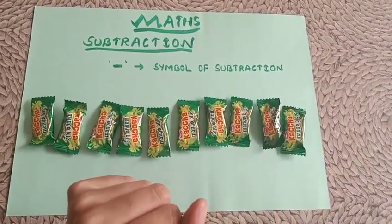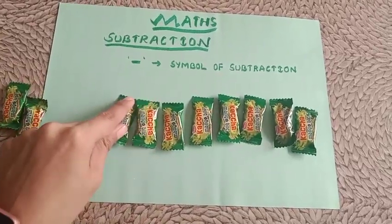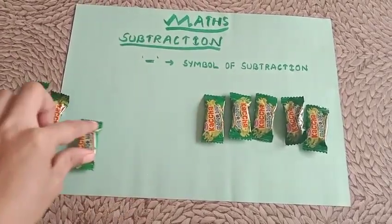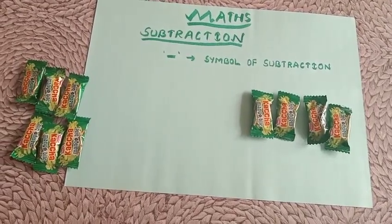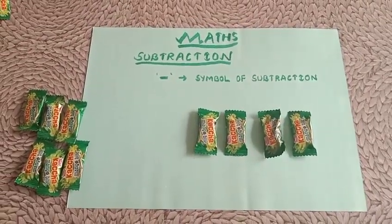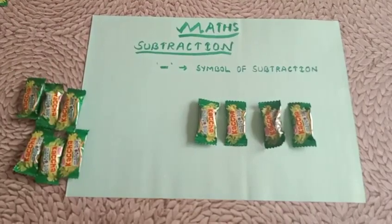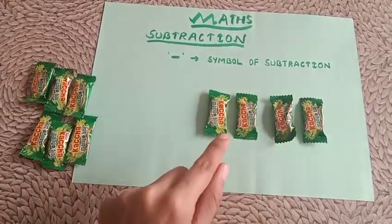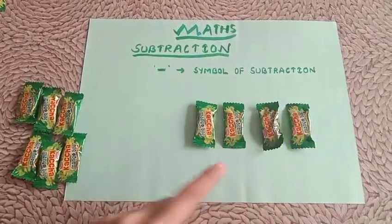If I give 1, 2, 3, 4, 5, and 6 — if I give 6 toffees to my children, how many toffees are remaining with me? If I have total 10 toffees and I have given 6 toffees to the children, how many toffees are left? 1, 2, 3, and 4. How many toffees are left, students? 4 toffees are left.